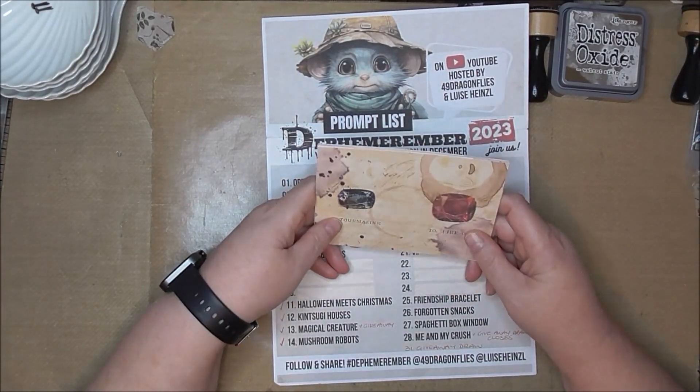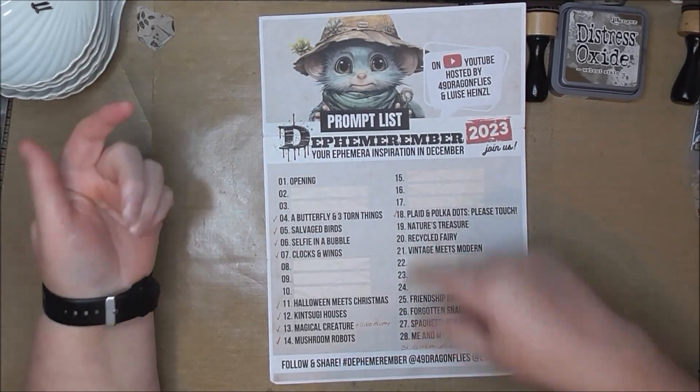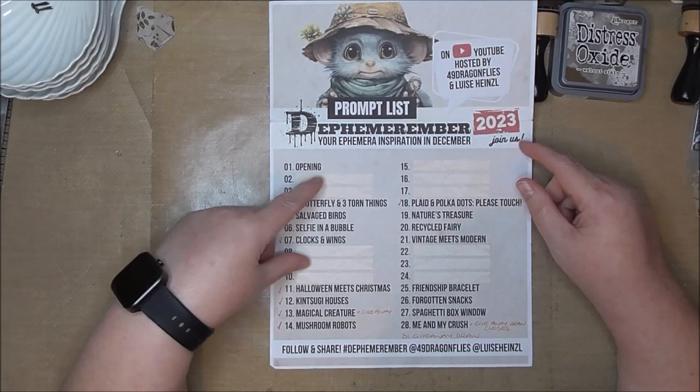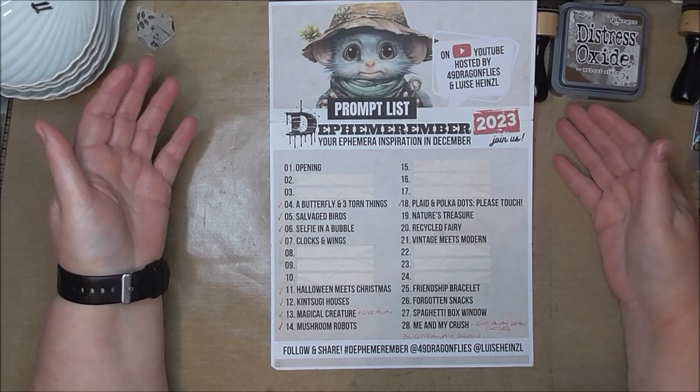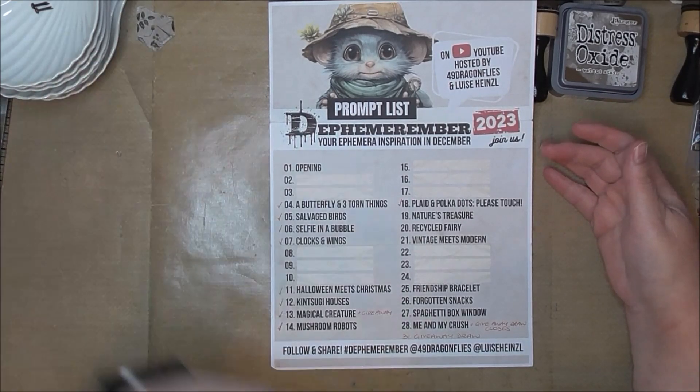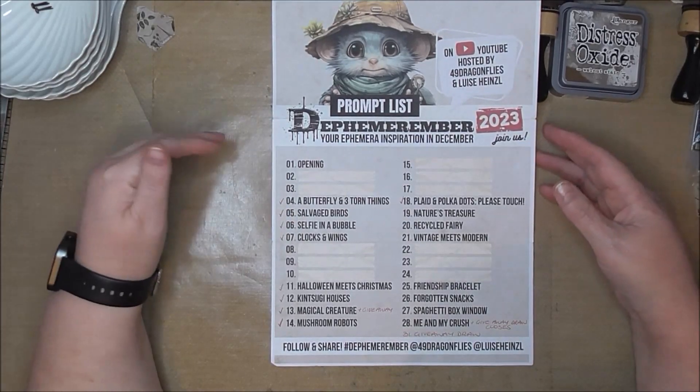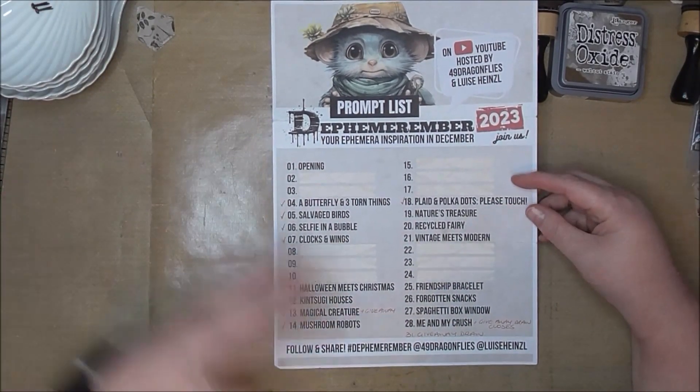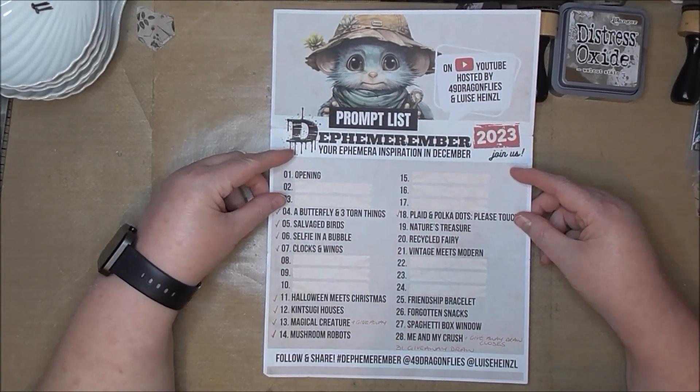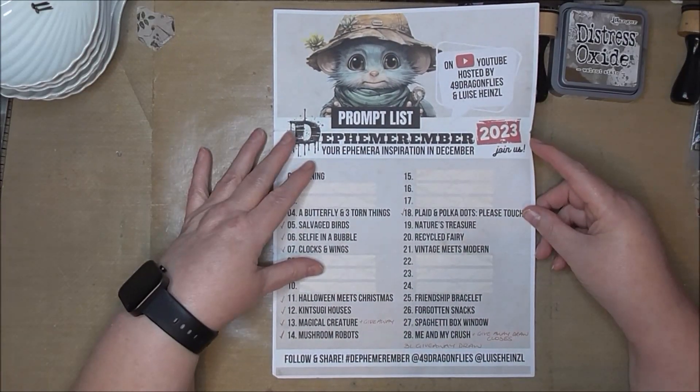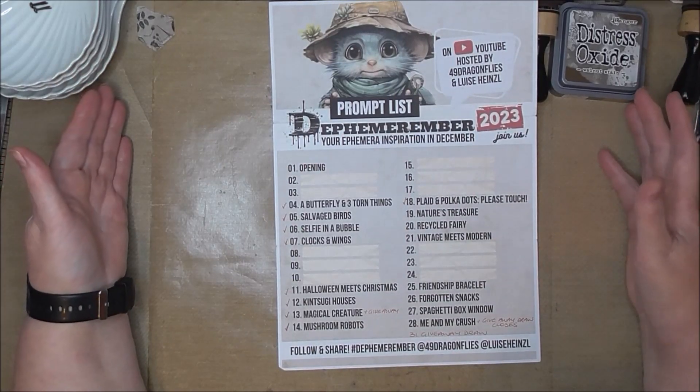Because last year Louisa and Barbara came up with their animal journal cards that they used through each of the prompts. And so I've printed those out myself, and those I'm actually going to use to write my instructions on for the prompts that I do.